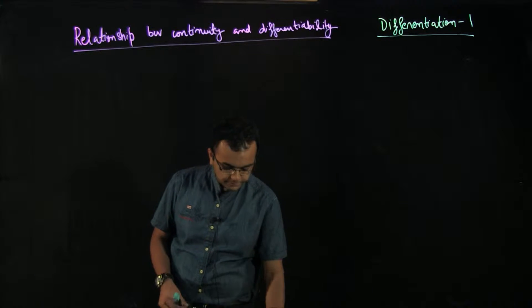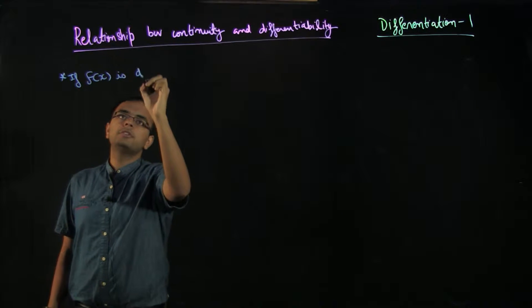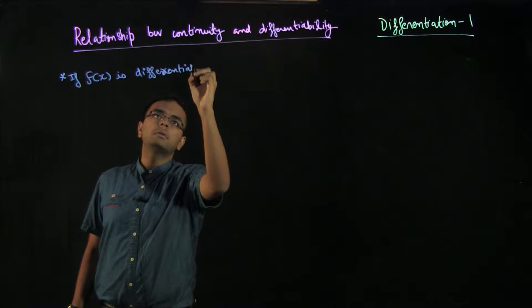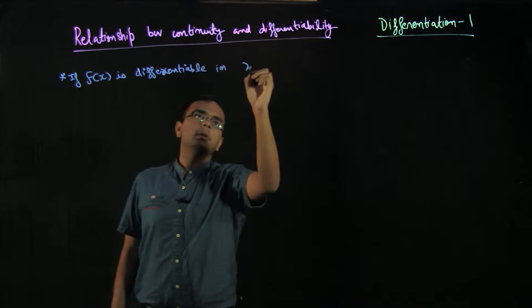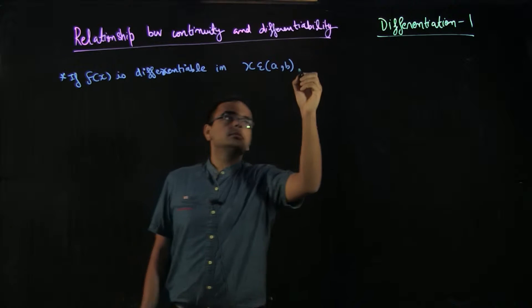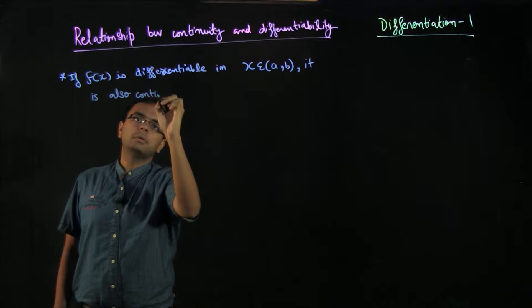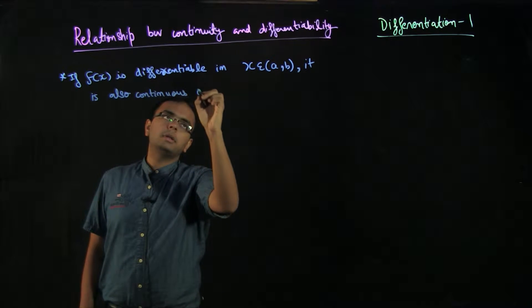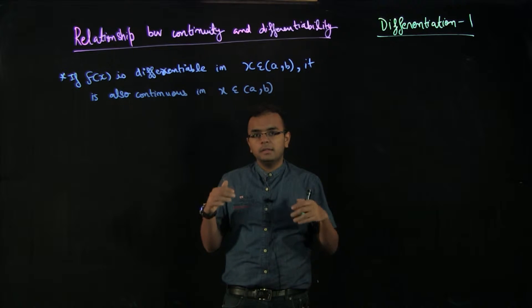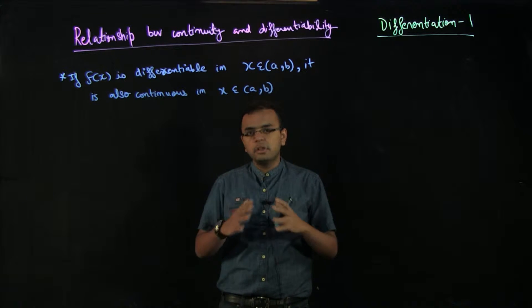There are three things I want to discuss. First: if f(x) is differentiable on x from a to b, then it is also continuous on x from a to b. In other words, if a function is smooth on [a, b], then it also does not have any breaks on [a, b].